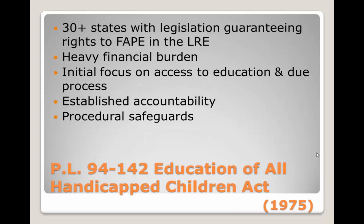By 1975, more than 30 states had passed legislation guaranteeing children with disabilities the right to a free, appropriate public education in the least restrictive environment. These state laws placed a new and heavy financial burden on states and local school districts. To assist with this burden, Congress passed Public Law 94-142, the Education for All Handicapped Children Act. This law initially focused on access to education and due process of law.